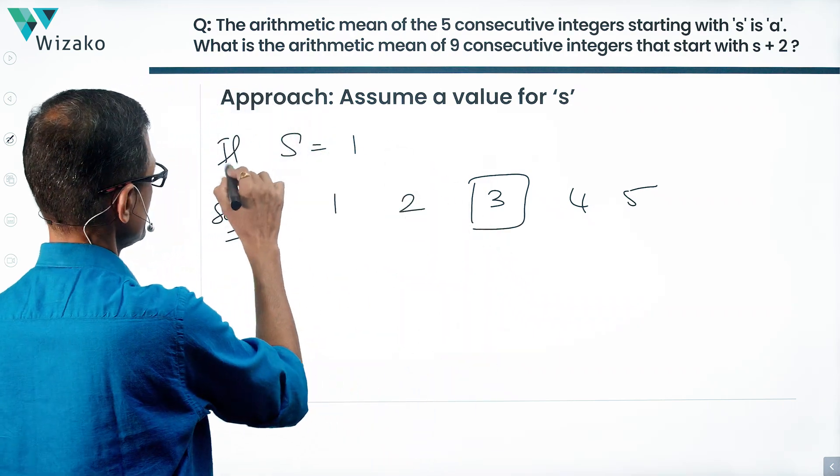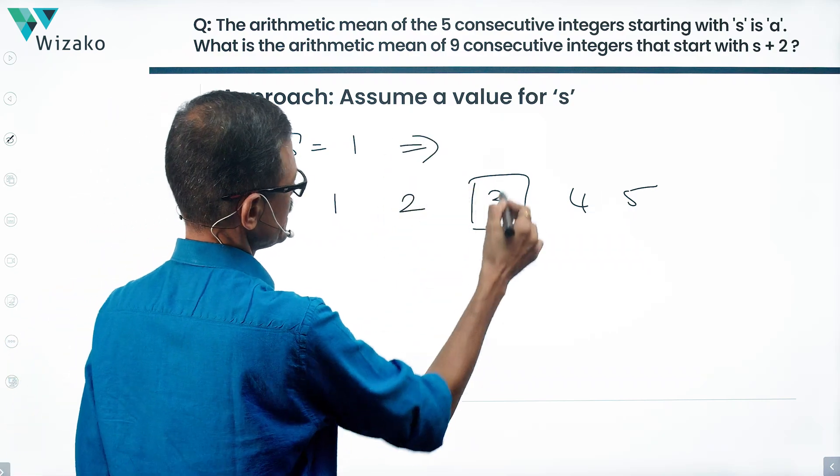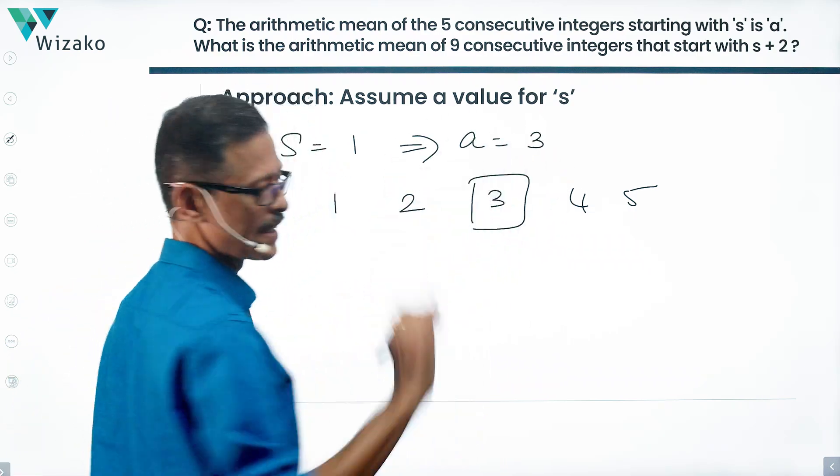If S is equal to 1, then the average A is equal to 3.